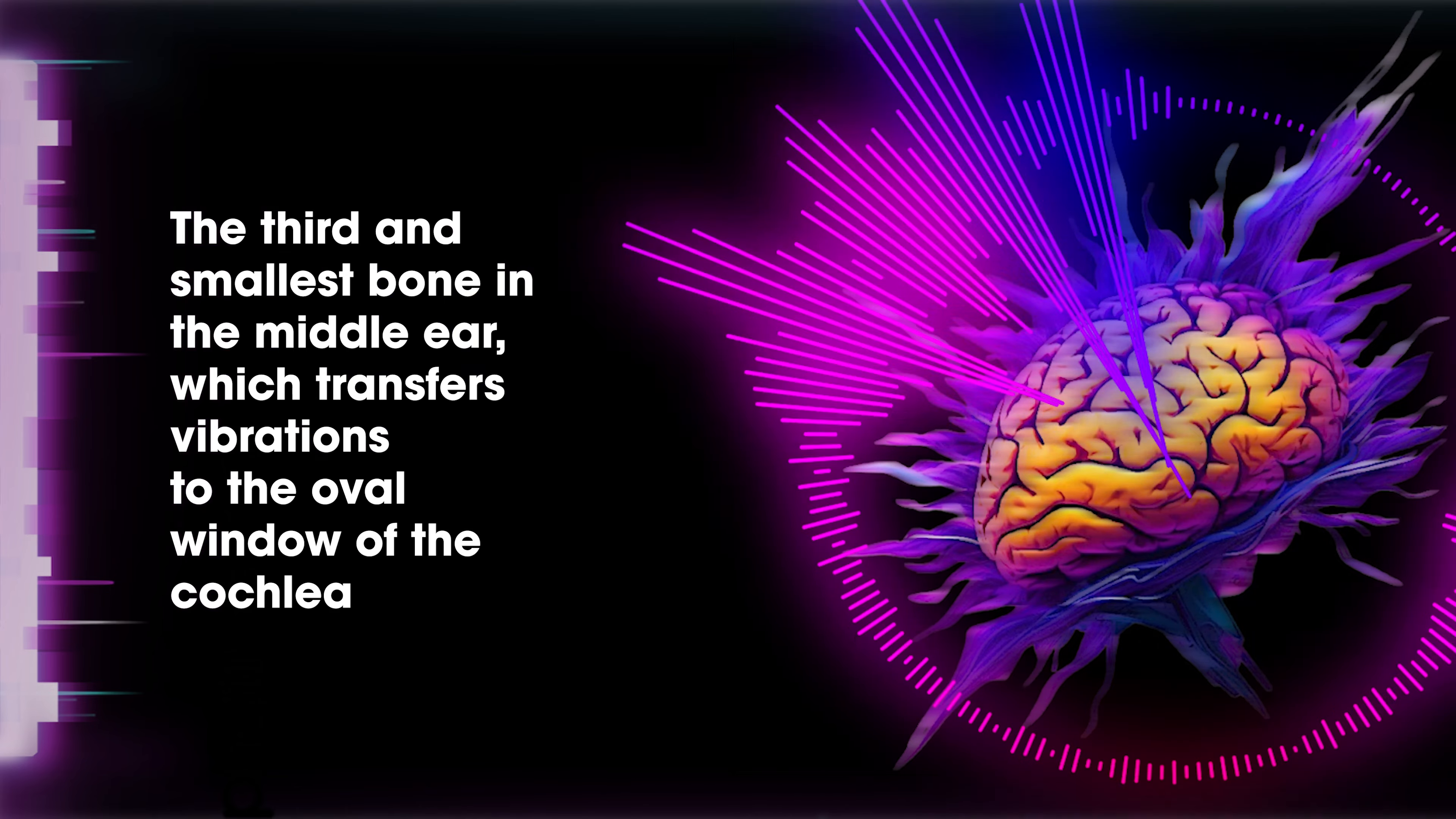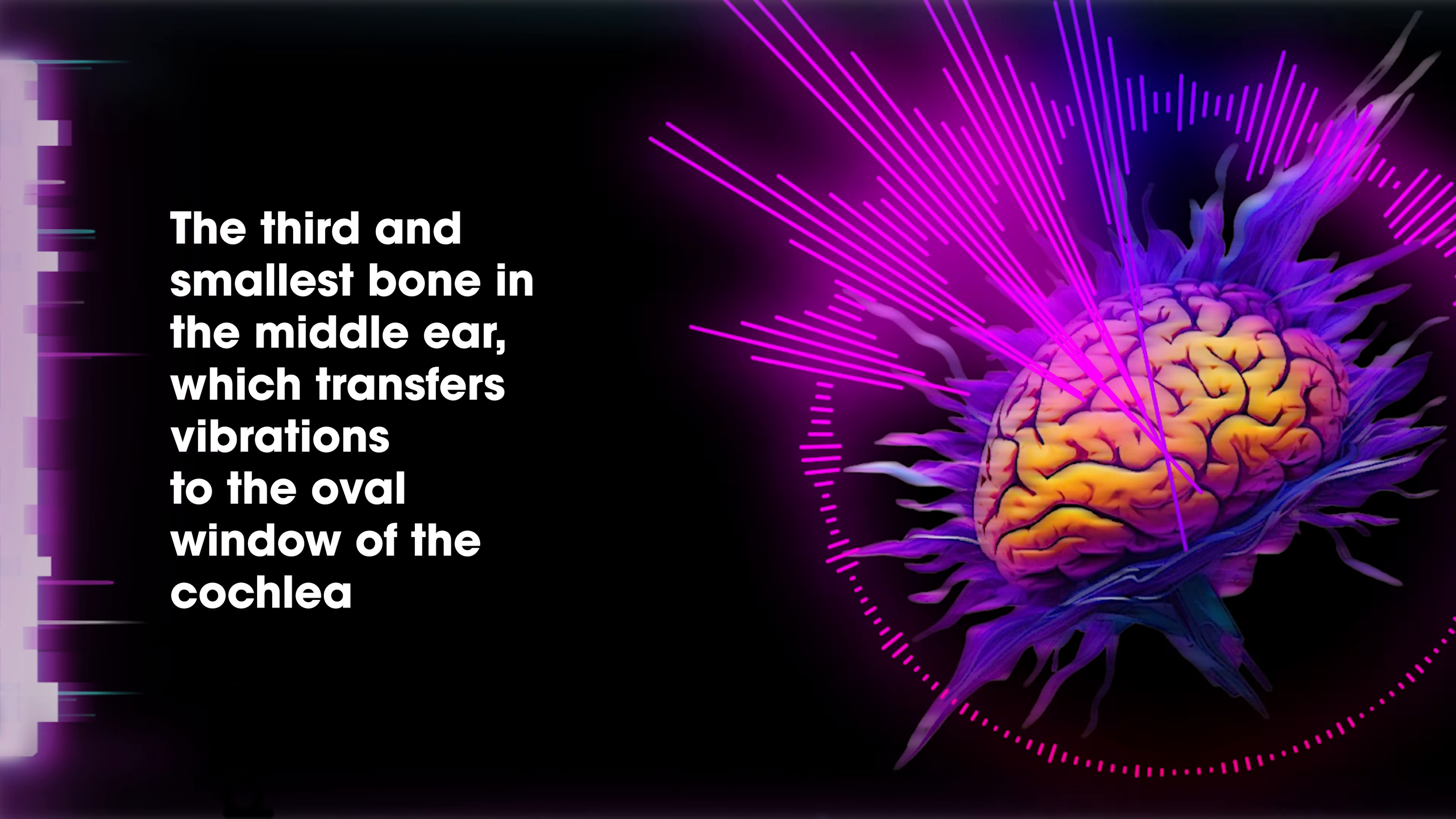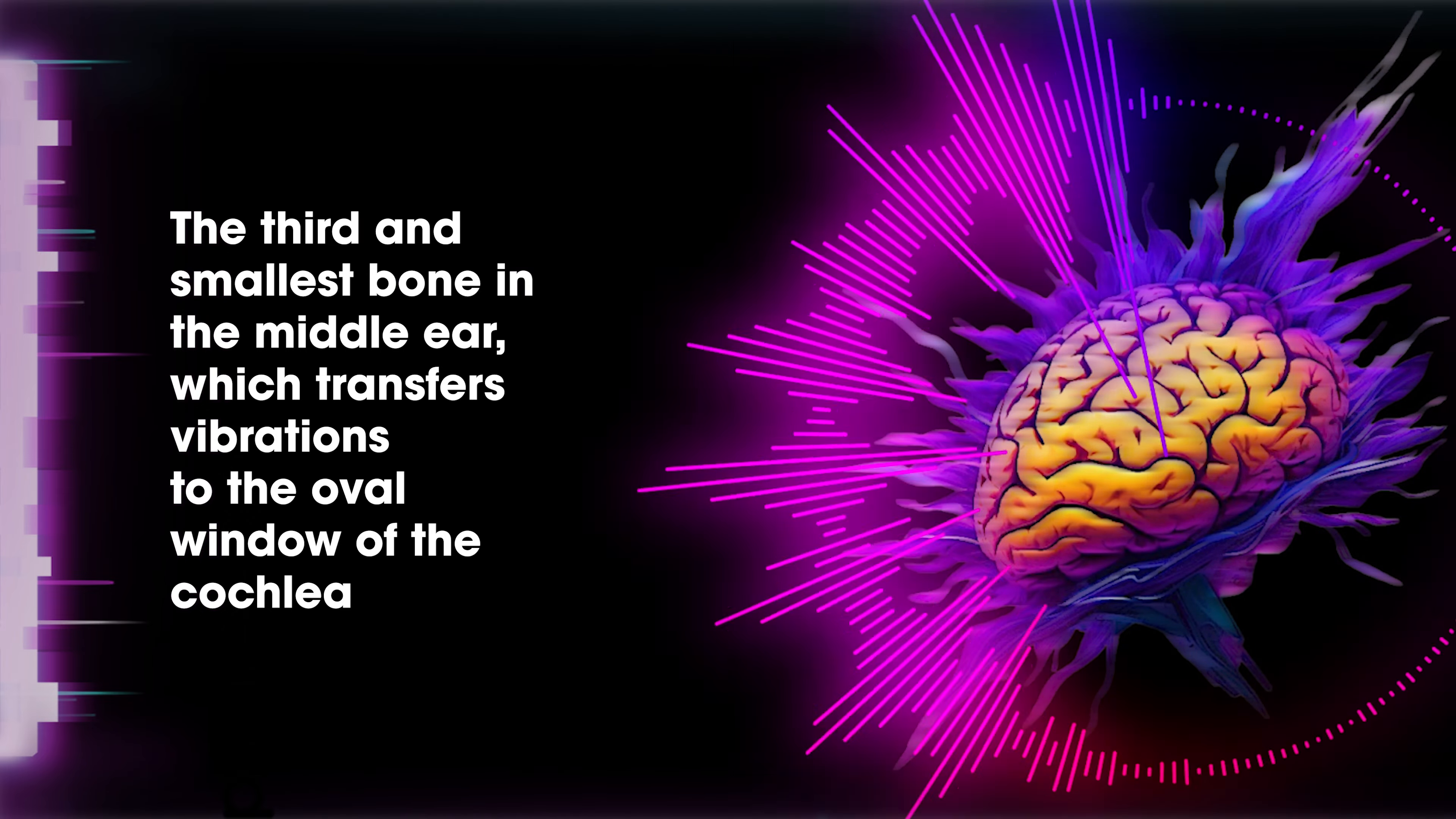Stirrup: the third and smallest bone in the middle ear which transfers vibrations to the oval window of the cochlea.